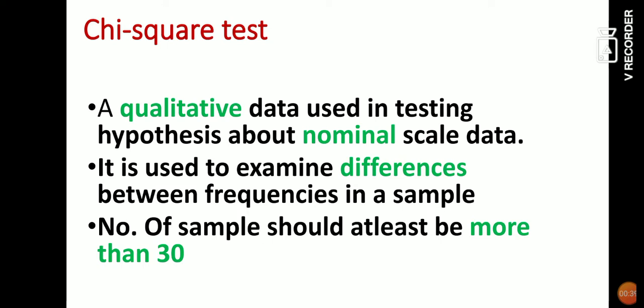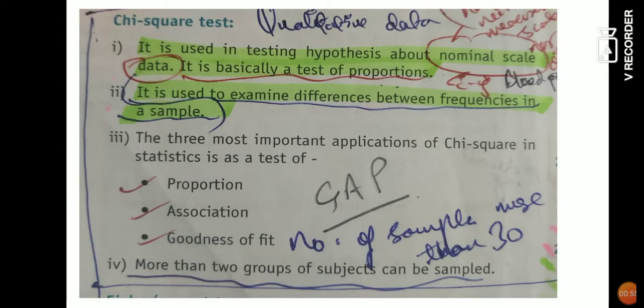In my further slides I'll be telling you about mnemonics, which will make it easier to remember these three things. Always remember that chi-square test is qualitative and is used to examine differences between two frequencies, and samples should always be large. From Dental Pulse, the most important applications of chi-square test are: proportion, association, and goodness of fit. Most MCQs are related to these three applications.